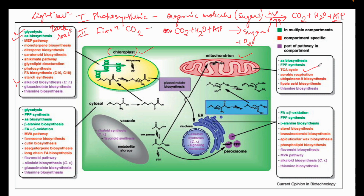In mitochondria we have the TCA cycle - this is common between plants as well as animals. The TCA cycle, which generates and fixes carbon dioxide, occurs in the mitochondria in both animal cells and plant cells. There are also other types of reactions which occur in the ER, nucleus, and cytoplasm.